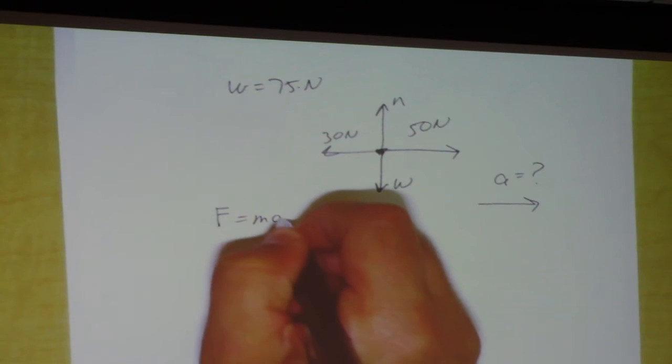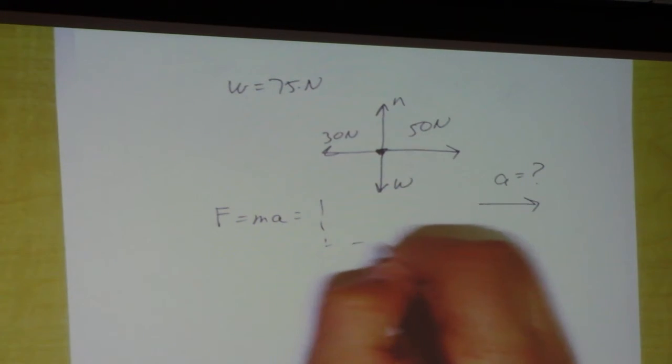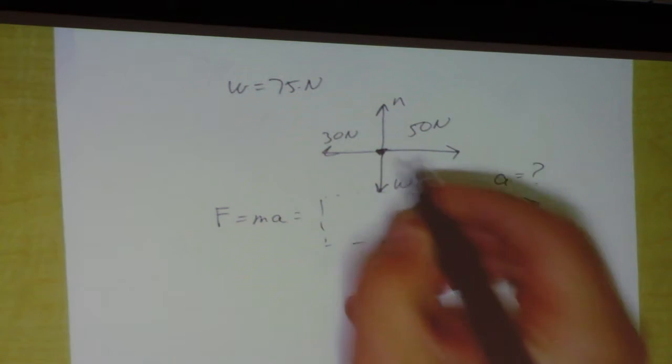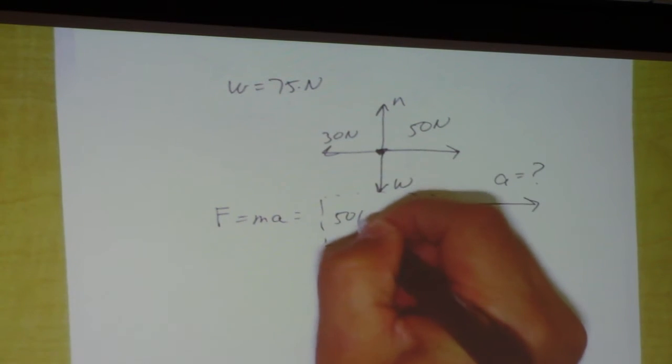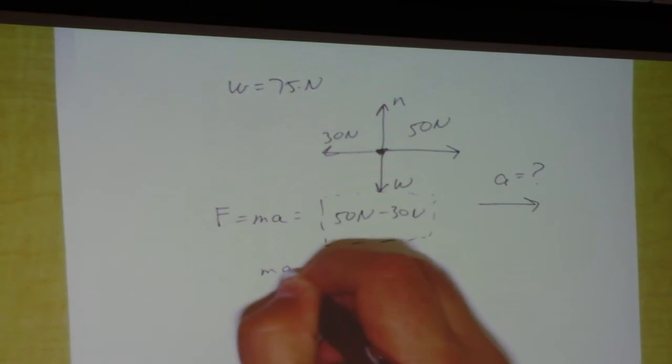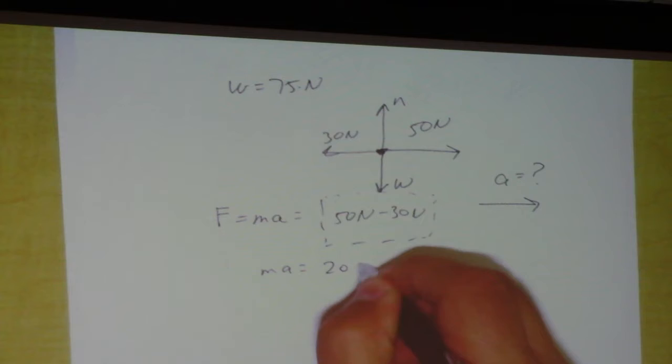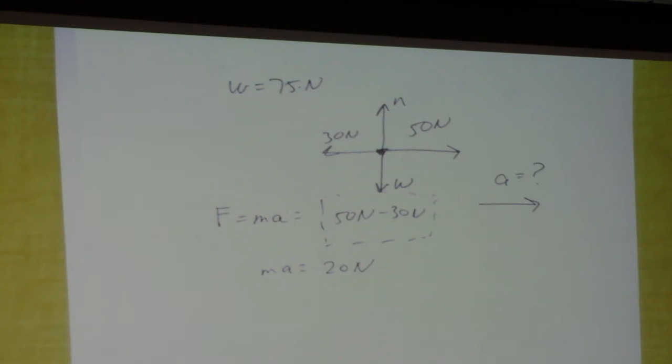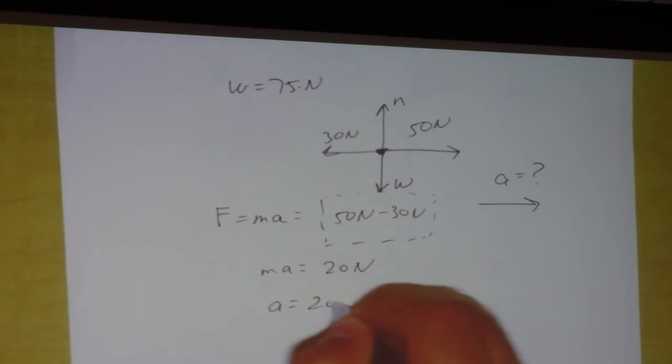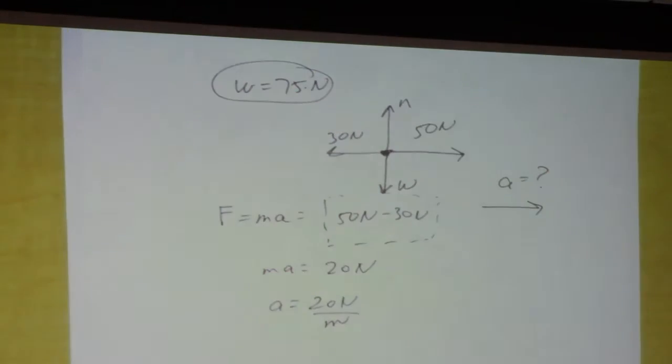So that's a clue to use Newton's second law. The net force is Ma. The actual force is 50 Newtons minus 30 Newtons, so M times A, then it's got to be 20 Newtons. Okay, so the acceleration is 20 Newtons divided by the mass. Remember, that's the weight, that's not the mass.